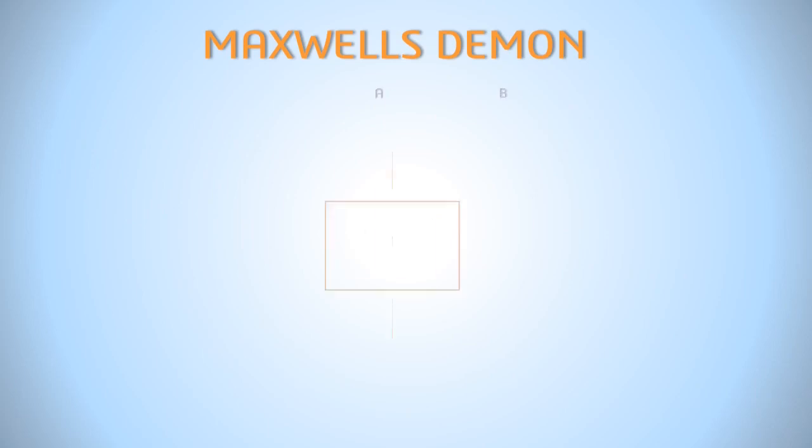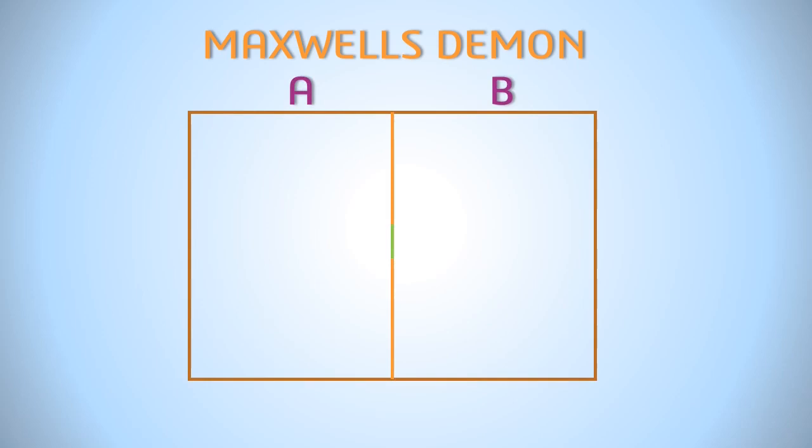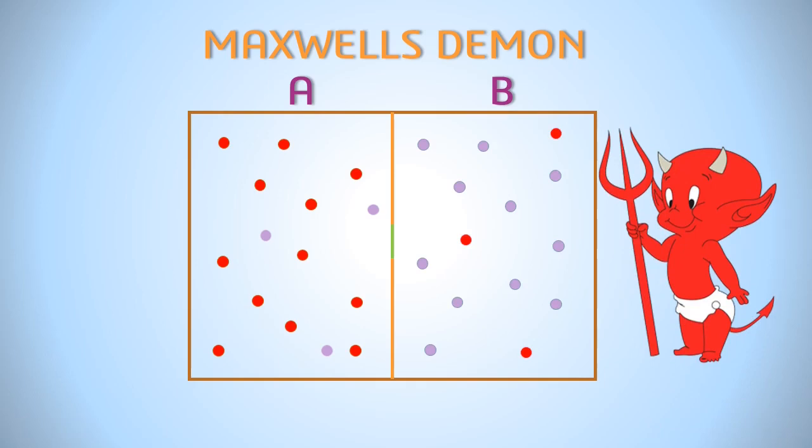In this experiment, there are two chambers, A and B, separated by a wall with a door. They are filled with gas. Temperature of A is greater than temperature of B. We have a demon watching this chamber who knows state of each and every molecule of this chamber at every moment.